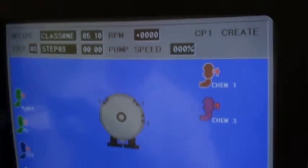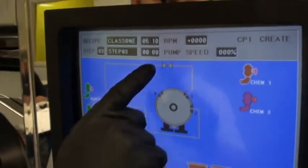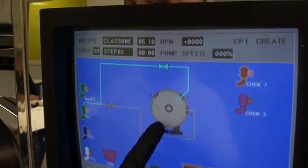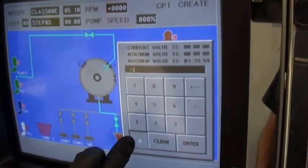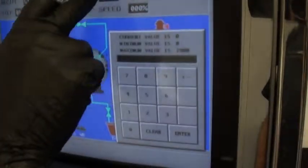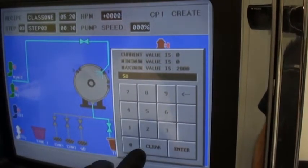Step three. This time we'll purge with nitrogen back to tank for 10 seconds, RPM 50. Step is done.